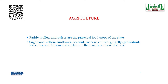Paddy, millets and pulses are the principal food crops of Tamil Nadu. Sugarcane, cotton, sunflower, coconut, cashew, chillies, gingelly, groundnut, tea, coffee, cardamom and rubber are the major commercial crops in our state of Tamil Nadu.